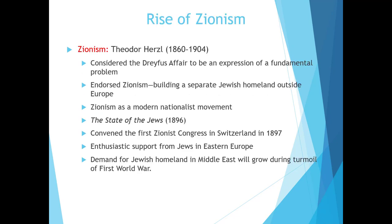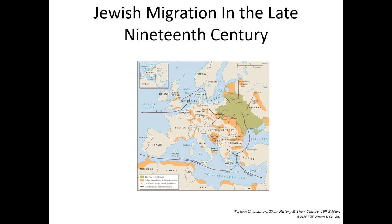Theodor Herzl considered the Dreyfus Affair an expression of a fundamental problem and endorsed Zionism — not just a feeling but the goal of building a separate Jewish homeland outside of Europe. Zionism was a modern nationalist movement. 'The State of Jews' was written in 1896, and the first Zionist Congress convened in Switzerland in 1897, with enthusiastic support from Jews across Europe, especially Eastern Europe. The demand for a Jewish homeland in the Middle East grew during World War One and was not settled until after World War Two.